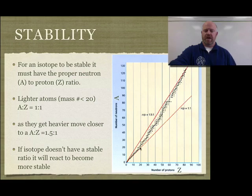But as soon as you get to 20, there's an obvious kind of shift or diverging away. And at that point, as these get heavier, that shifts to more of a 1.5 to one ratio. So for your heavier elements, you actually want to have more neutrons than protons in there for their more stable isotopes.